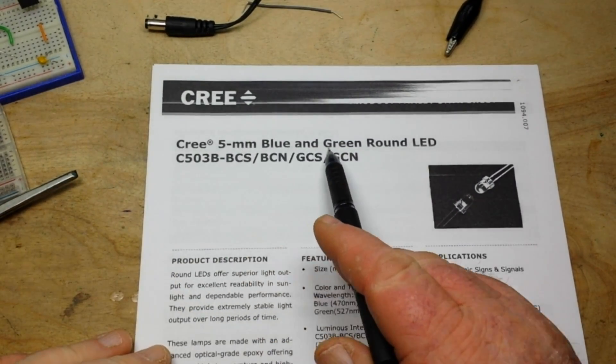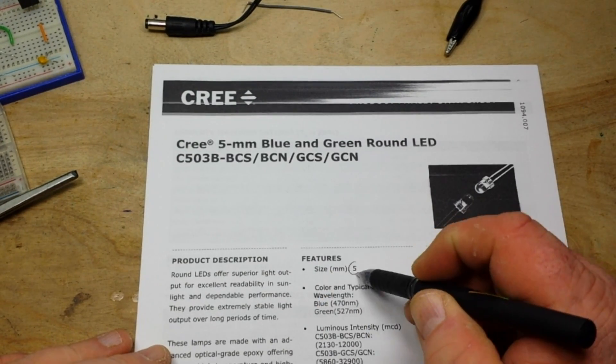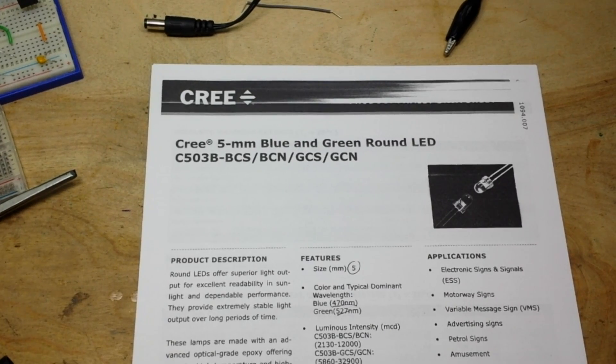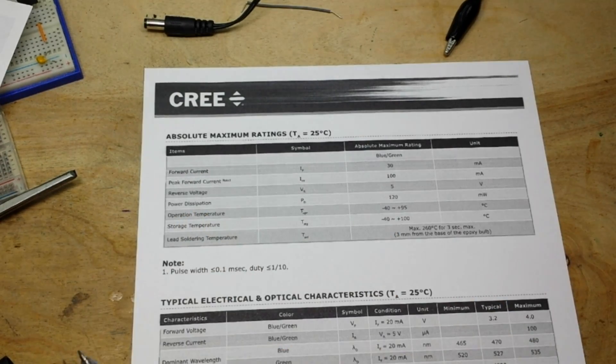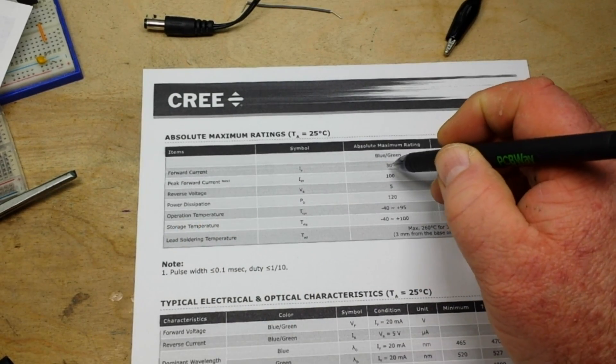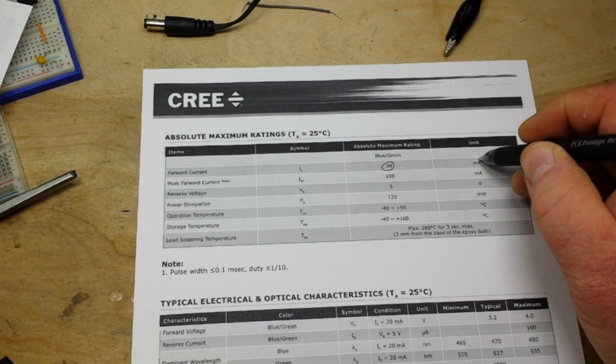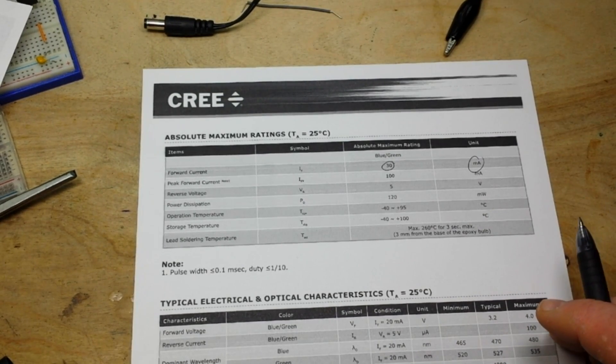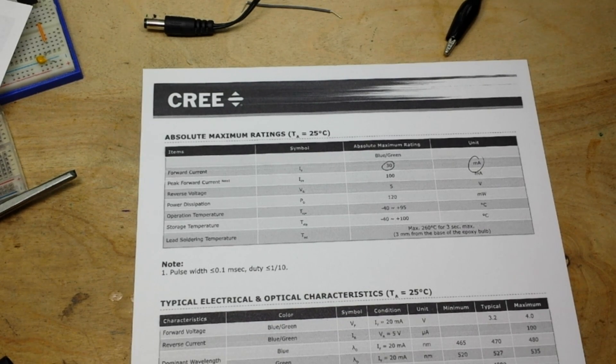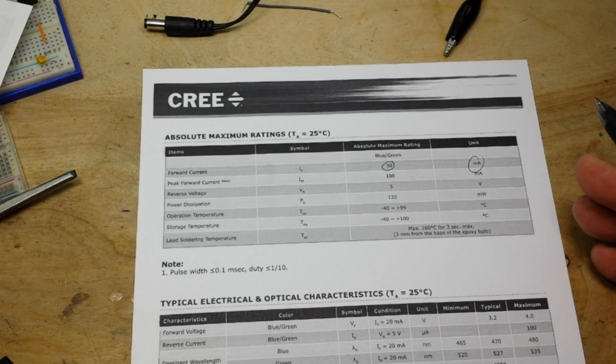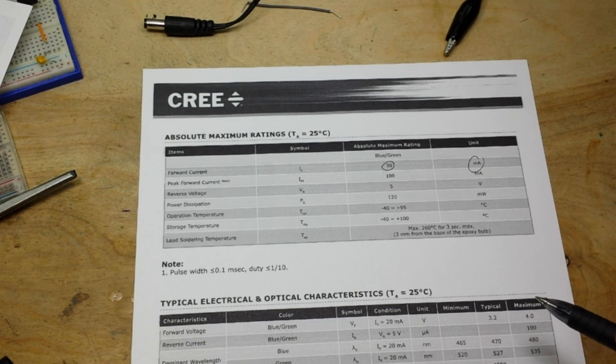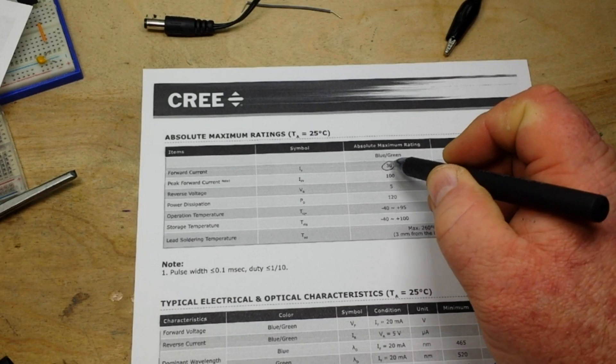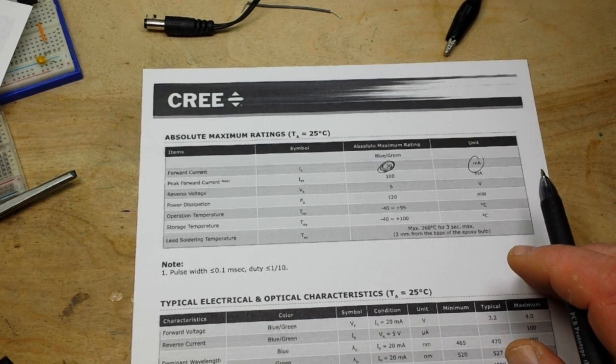This data sheet is for five millimeter blue and green round LEDs. And then we can come over here to our absolute maximum ratings. And you can see our forward current is 30 milliamps. Now, 30 milliamps is the maximum. 20 milliamps is generally where you want to drive an LED. But I prefer to drive them even lower, around 15 to 10. And I'll show you and prove to you they'll be plenty bright. So that's one piece of information you need, the forward current maximum.